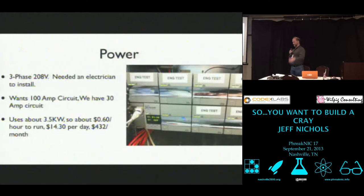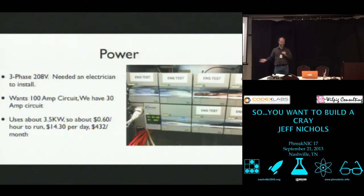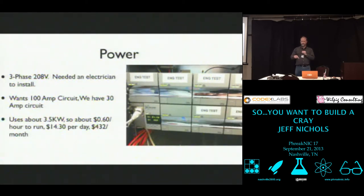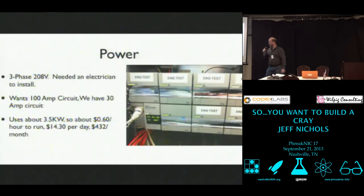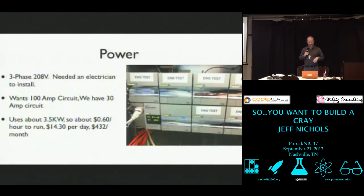There was just this explosion of really arcane, weird power discussion that came up on the email list. They started talking about three-phase power — how many amps can you get. It turned out this was the discussion for how do you power a Cray. It is three-phase, 208 volts. We needed an electrician to come and install that. They spec that they want a 100-amp circuit. Try to get a 100-amp circuit from TVA — we have a 30-amp circuit. It delivers 52 volts DC at 62 amps. It uses about three and a half kilowatts just sitting idle, so it costs about 60 cents an hour — which works out to about $15 a day or $400 a month.